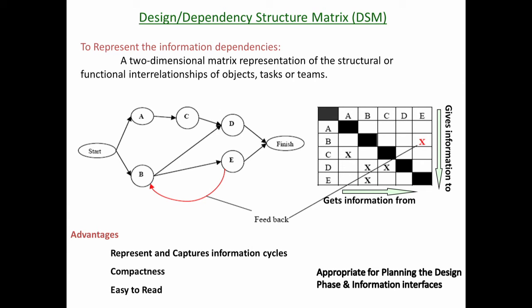I now move on to an area which is not so much applied in practice but is a very interesting area called the dependency structure matrix, or DSM — also referred to as the design structure matrix. Its primary utilization is for design management, more than construction management; it is used in the design phase. The key reason is that CPM cannot take feedback loops — if E depends on B, B cannot depend on E again. But design is an iterative process, not a one-time process. There will be iteration and information exchanges between design elements.